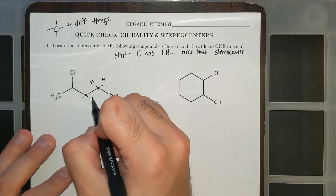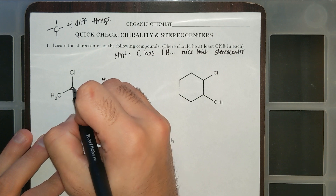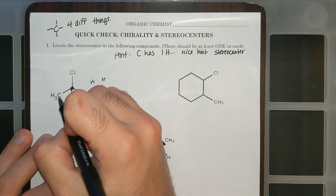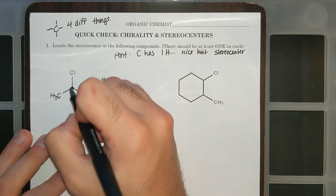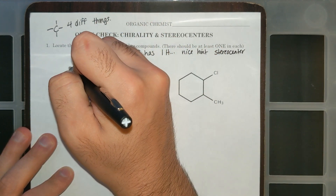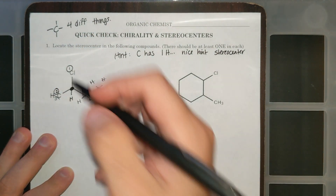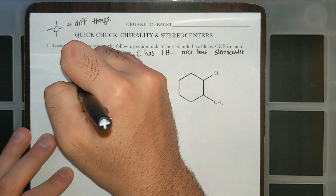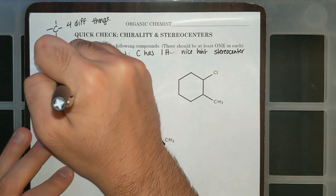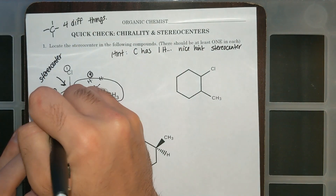This carbon only has one hydrogen, so there's potential for it to be a stereocenter. This carbon has three hydrogens — not a stereocenter. So I'm going to look at this carbon: does it have four different things attached to it? There's a chlorine, there's a methyl group or CH3 on the left side, there's a hydrogen, and there's this whole big chain, which is the fourth thing. This is a stereocenter, or the chiral carbon.